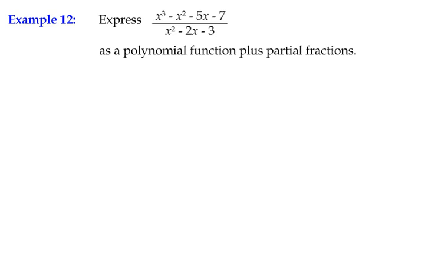This is example 12 of our partial fractions topic. What we have here is an improper rational function, and we're going to work with these types of functions with our partial fractions. The problem is that we can only make partial fractions of a proper rational function — one where the order of the numerator is less than the order of the denominator. Looking at the highest order terms, we've got x cubed (order 3) divided by x squared (order 2). Since 3 is bigger than 2, we have an improper, top-heavy fraction.